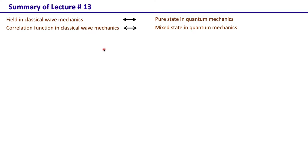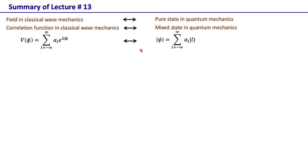Taking the example of the orbital angular momentum state, we can write a field in the angle basis in terms of fields in the orbital angular momentum basis. This represents a coherent sum when there is no randomness in the field. Similarly in quantum mechanics, we write a state as a ket vector in terms of orbital angular momentum ket vectors, also representing a coherent sum.